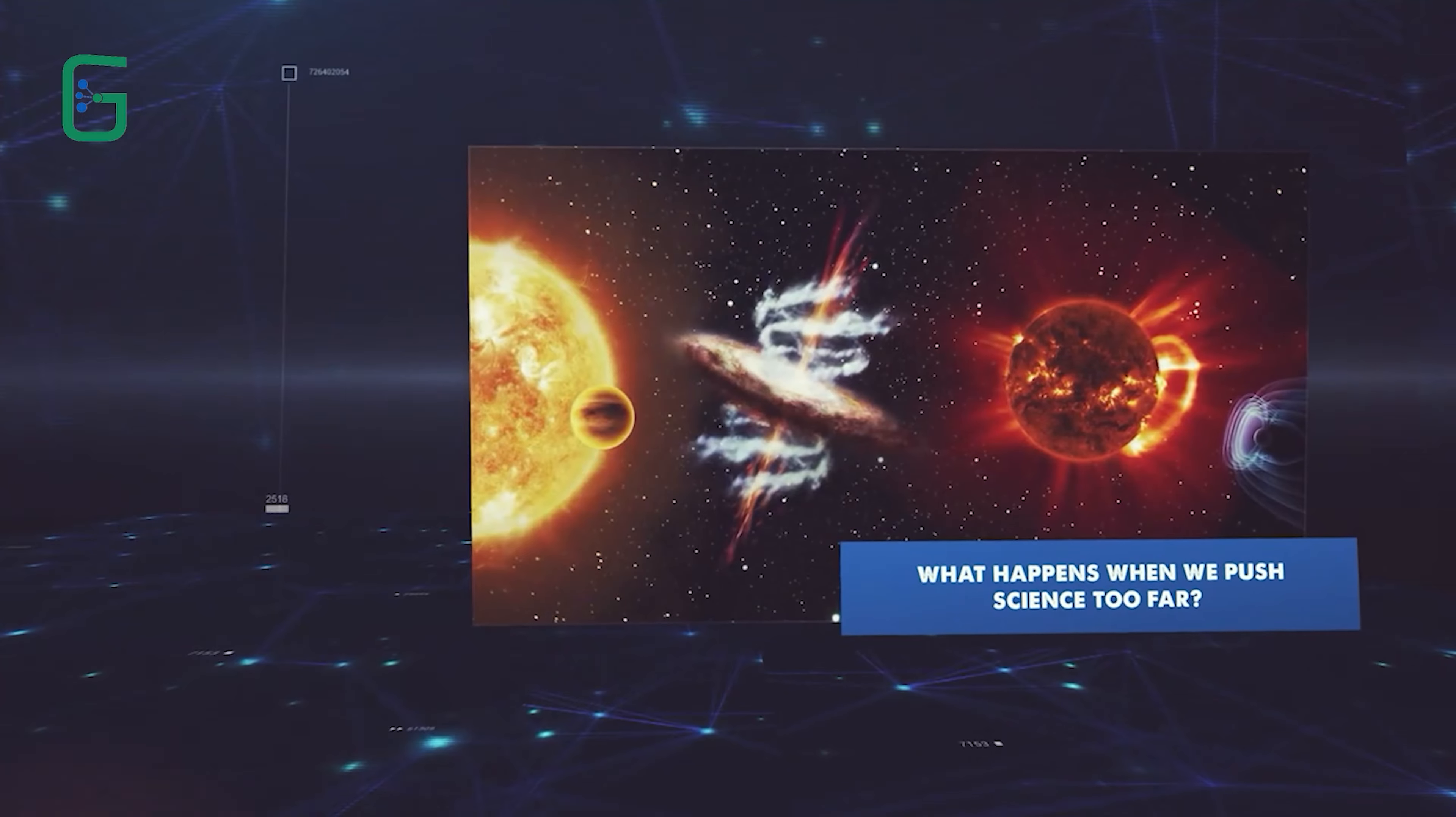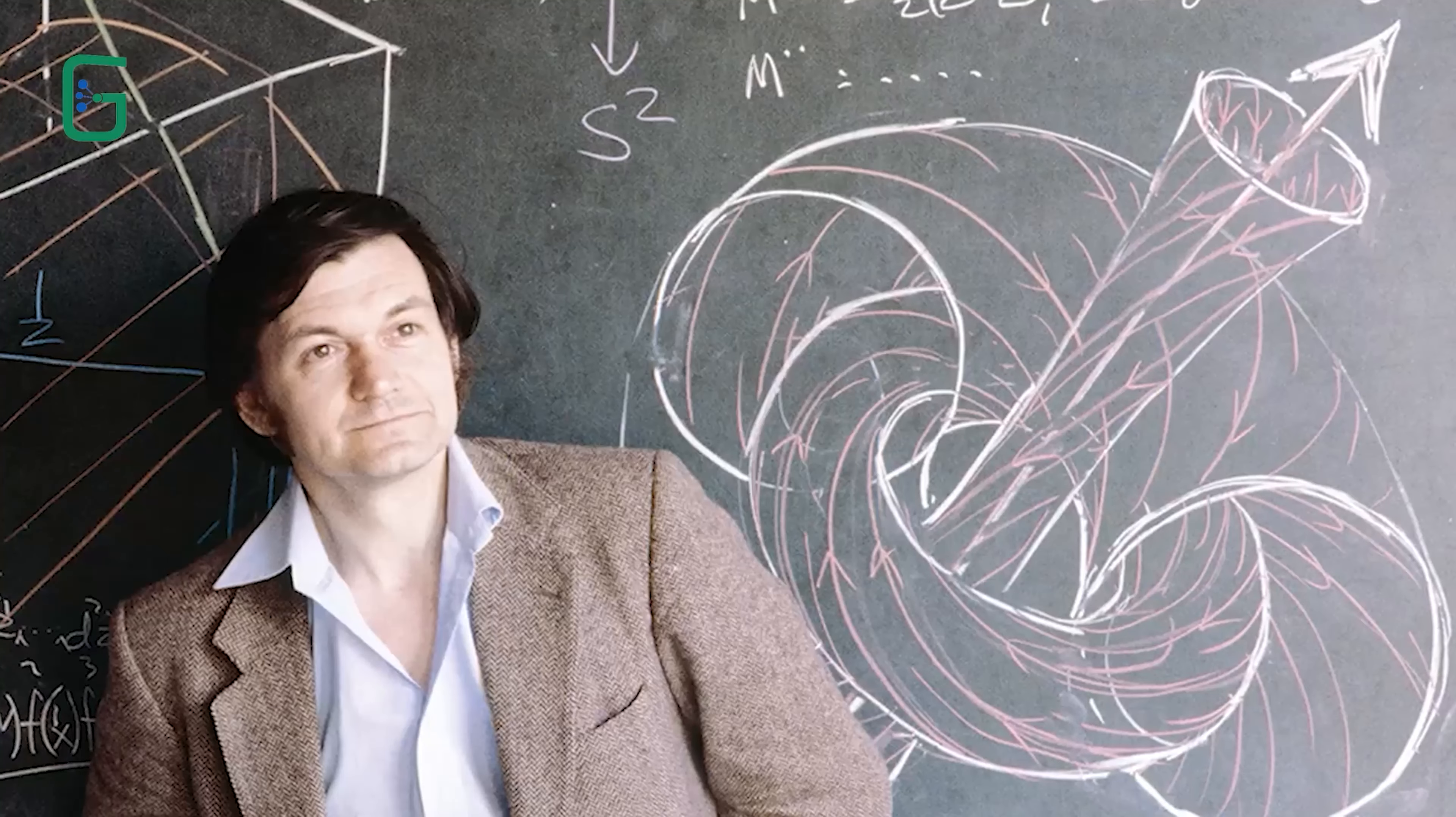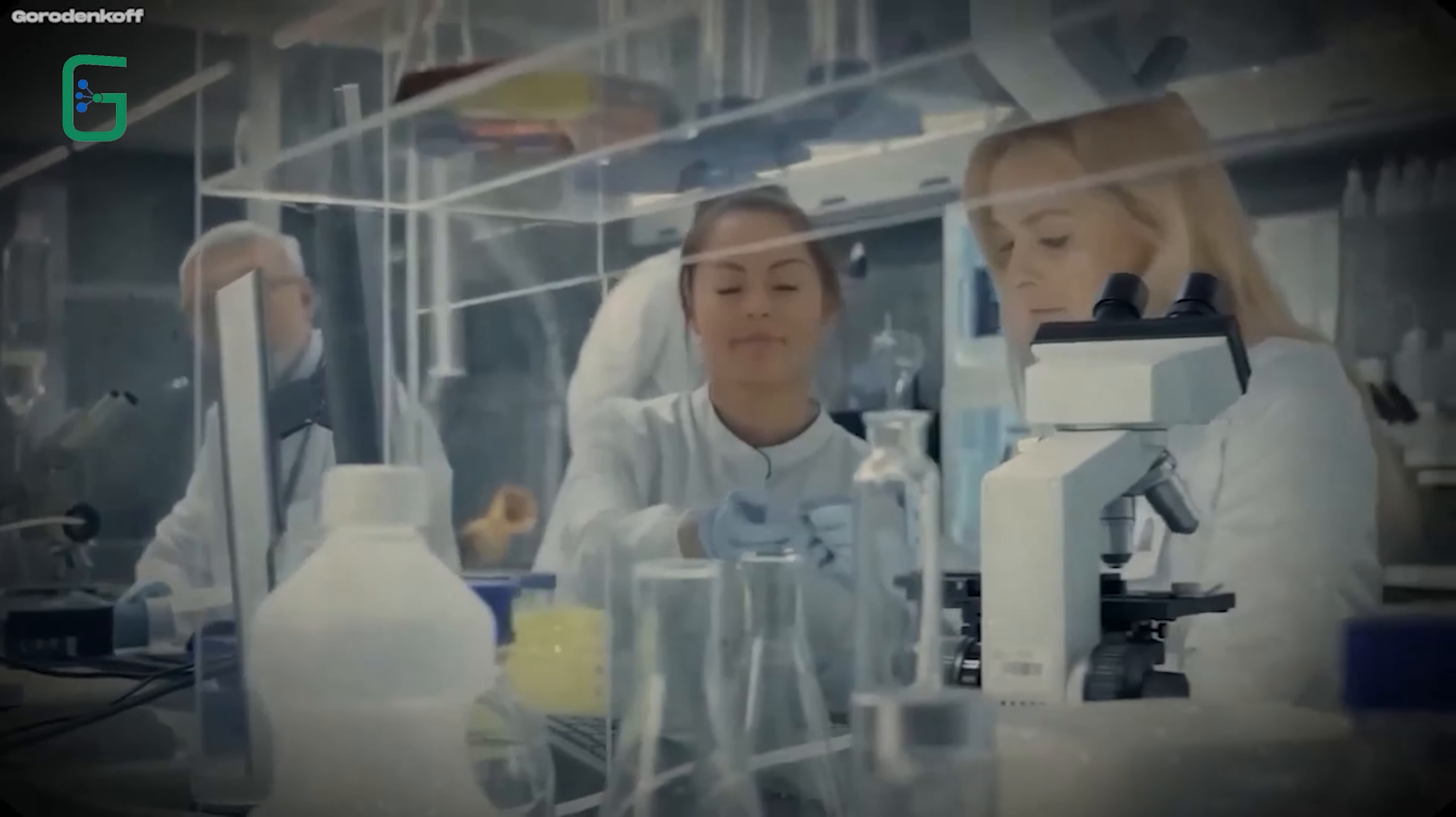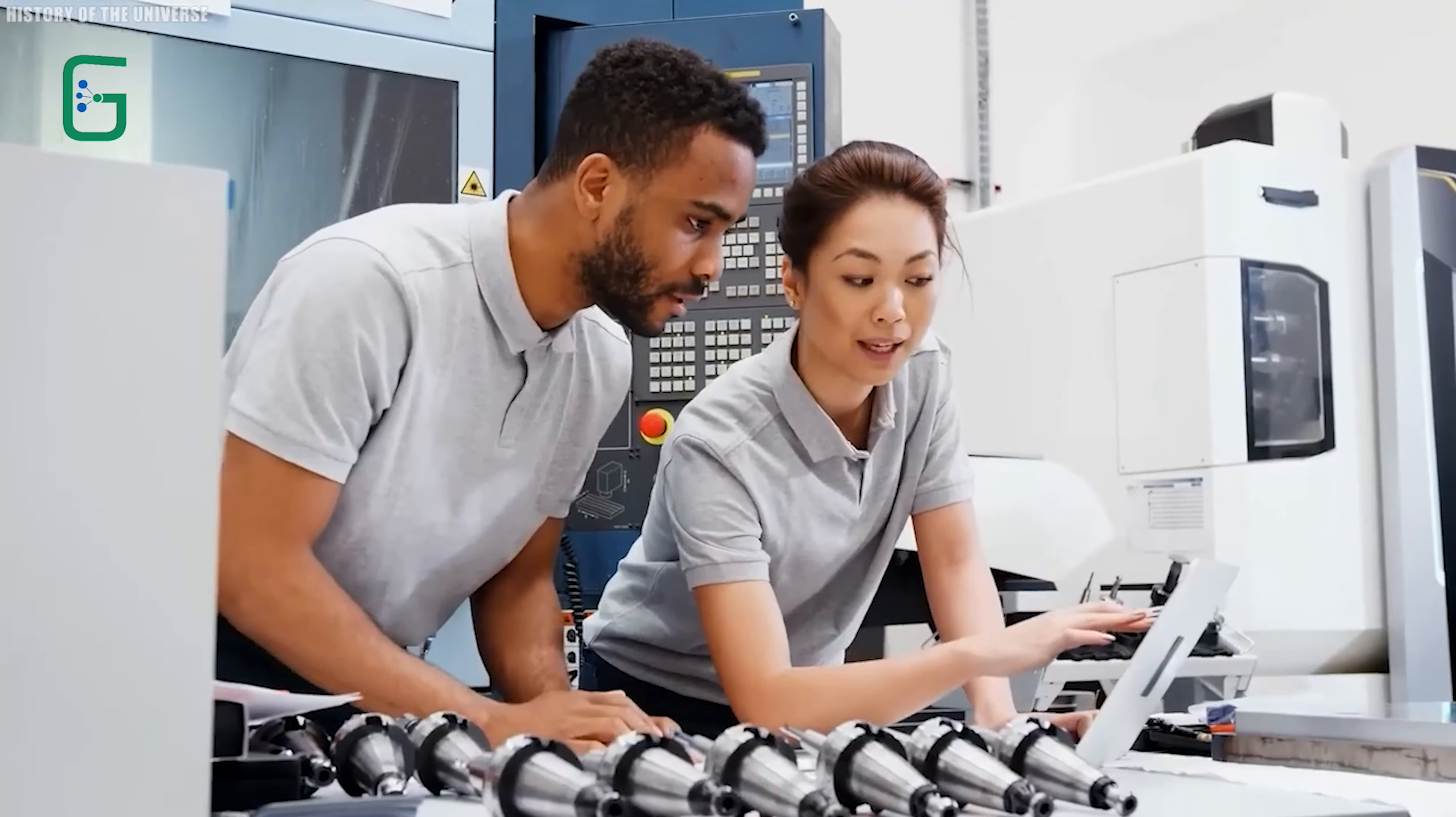What happens when we push science too far? In 1931, the world saw the birth of Roger Penrose, a British mathematician and physicist whose work would one day challenge the very foundations of science. Throughout his long career, Penrose explored some of the most puzzling mysteries of the universe, including the nature of space and time and the complex workings of human consciousness. Known for his creative and unconventional thinking, he often introduced ideas that made people rethink the way they understood the world around them.